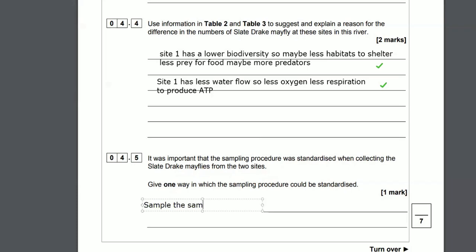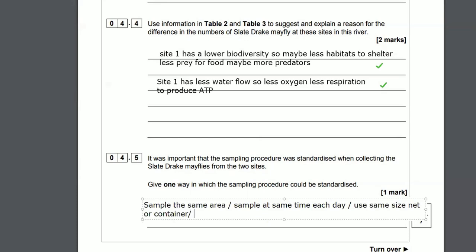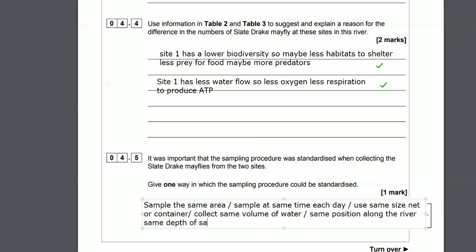It's important when there's sampling that it's standardized. So this is just asking you, what are some control variables? You want to take your samples from the same area and at the same time each day, because certain species may come out more at different times of the day. Use the same size net or the same size beaker or however you're capturing these things. Same position along the river. You don't need to collect the same volume of water. Same depth of sample, well, you're probably doing it off the surface to catch mayfly and stuff, so you don't really need to do it at the same depth. But if you were trying to get fish, then maybe you'd do it at the same depth.